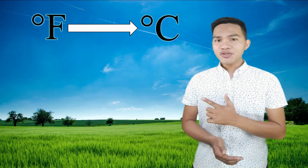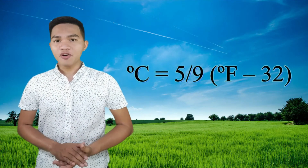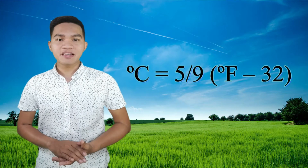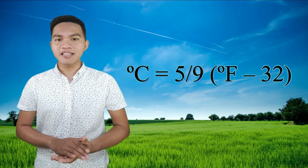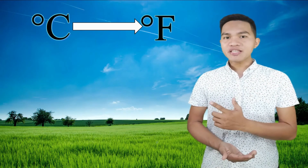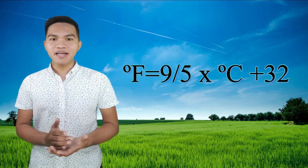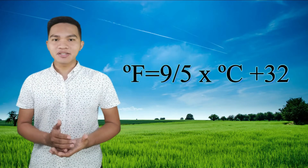To convert a Fahrenheit measurement to a Celsius measurement, use this formula: degrees Celsius is equal to 5 over 9 times the difference between a measurement in degrees Fahrenheit and 32. To convert a Celsius measurement to a Fahrenheit measurement, use this formula: degrees Fahrenheit is equal to 9 over 5 times a measurement in degrees Celsius plus 32.